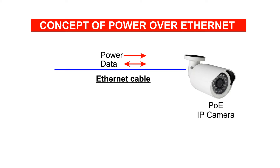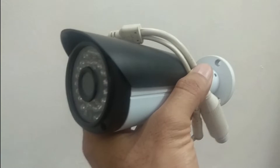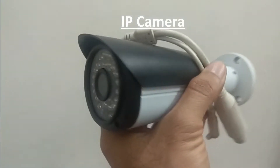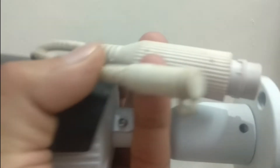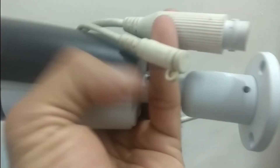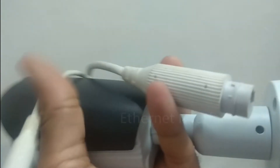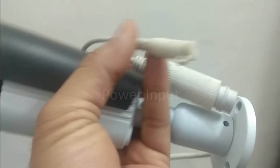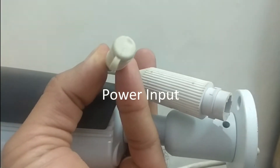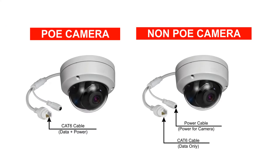The advantage of PoE cameras is that we do not need to lay separate cables for power and data. This IP PoE camera has a provision for PoE power that can be provided through the Ethernet port, or alternatively 12V DC power can be provided through the power input connector. We advise you to go for PoE cameras. To learn about PoE in detail, you may watch our old video — the link is in the description box.